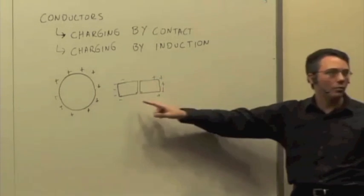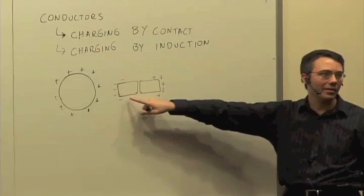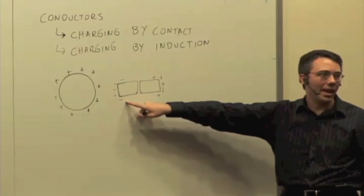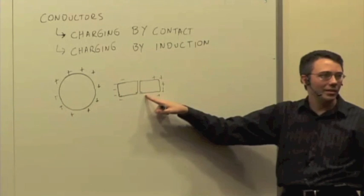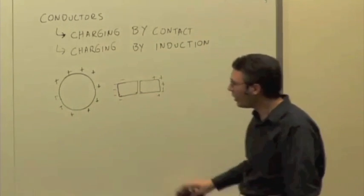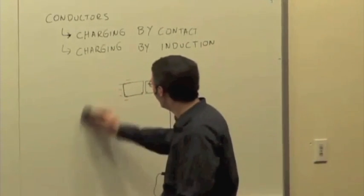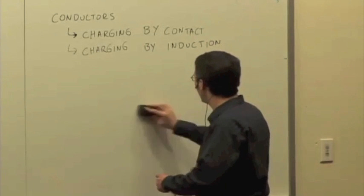And now what have I created? I've got one object that does have a net negative charge and the other object that now has a net positive charge. I take away the original conductor and separate these two things.